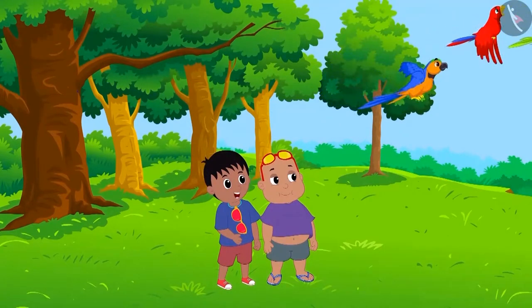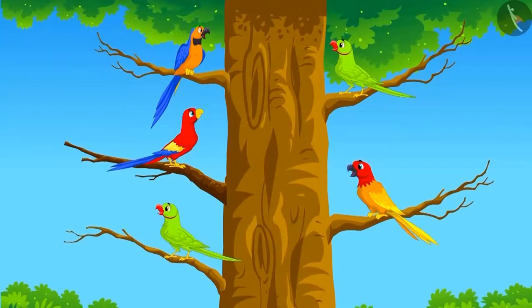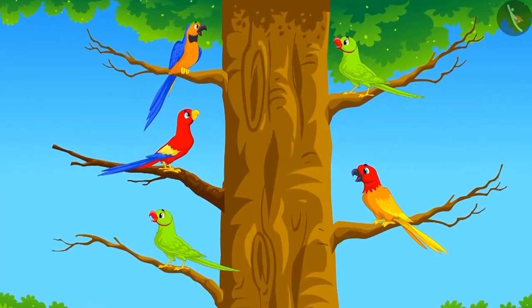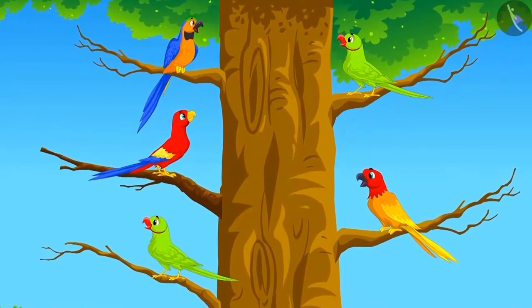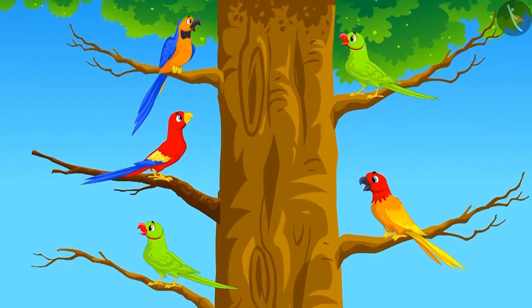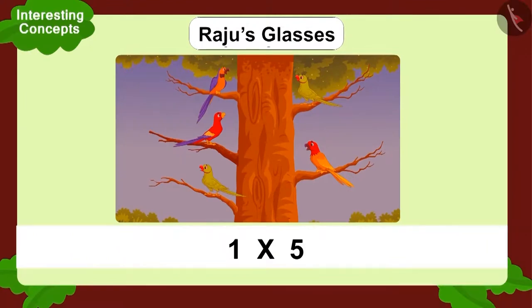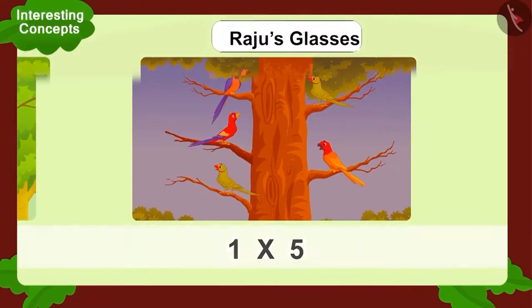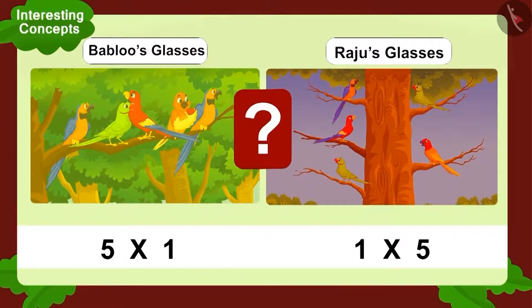Suddenly, the birds flew. And now, there was one bird on five separate branches. Raju wore his glasses and looked at the tree. He saw this multiplication. Did Raju see the same number of birds as Bablu?